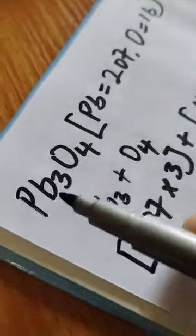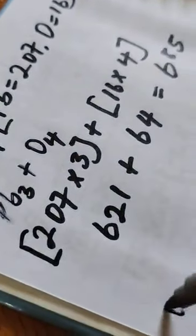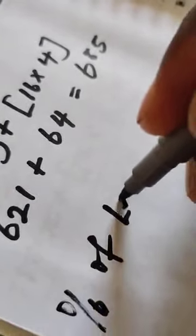Now to calculate the percentage composition of lead in this compound, don't forget lead is carrying the three, which means the percentage composition of lead is going to be Pb3 over Pb3O4 times 100 over 1.